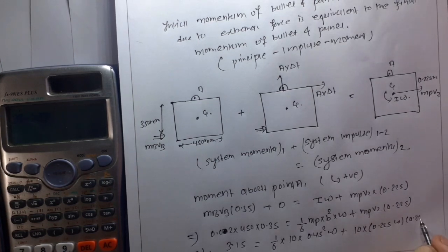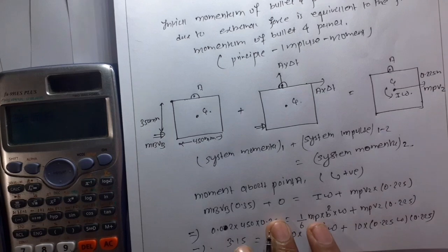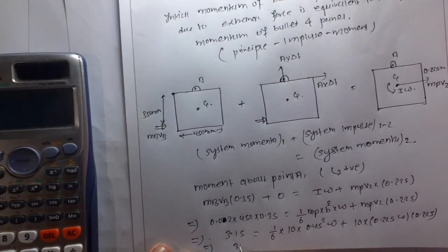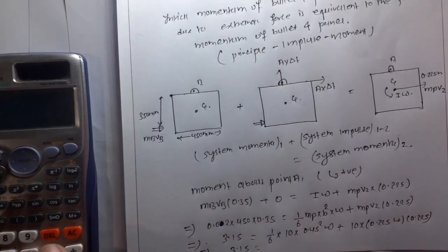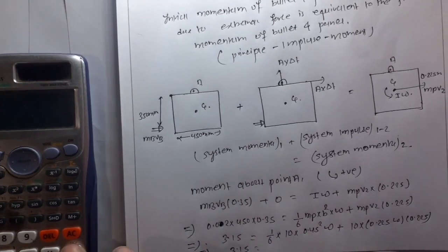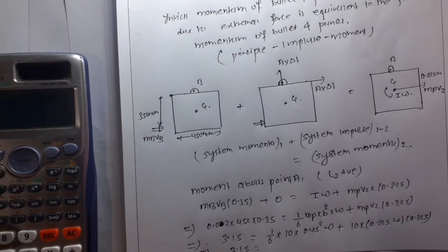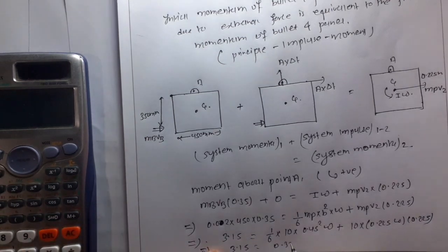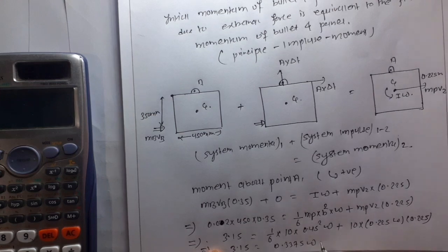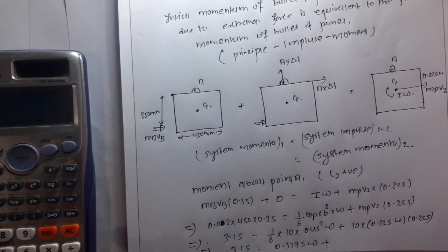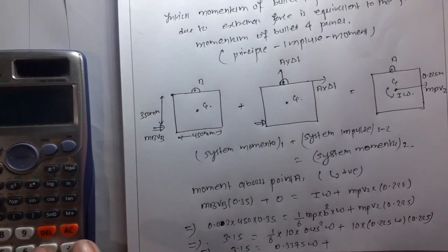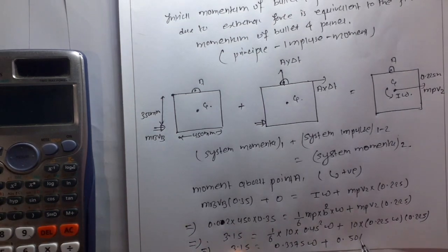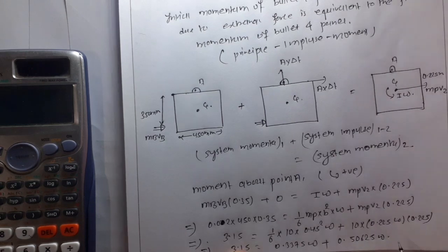This implies 3.15 is equal to 0.45 squared divided by 6, which is 0.3375 omega, plus 0.225 squared times the mass, which is 0.50625 omega.